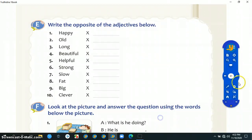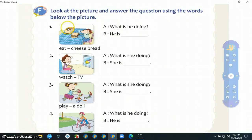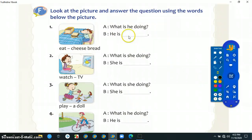Kita lanjutkan ke halaman selanjutnya. Look at the picture and answer the question using the words below the picture. What is he doing? Ini telling activities. He is, nah dari kata eat maka jawabannya adalah menjadi eating.